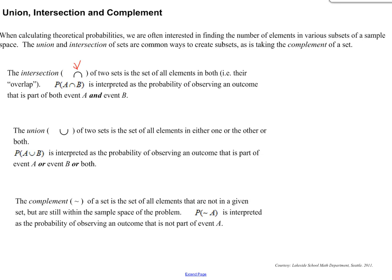The union, which is basically this U right here, of two sets is the set of all elements in either one or the other or both. And that is written as P(A union B), all right?